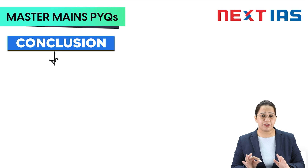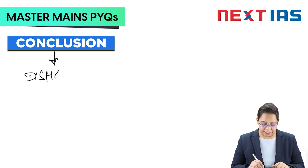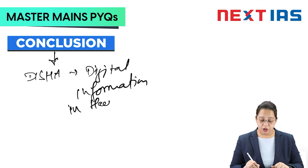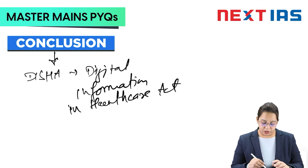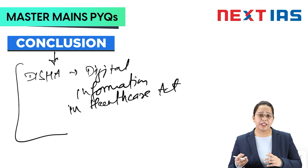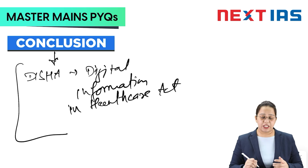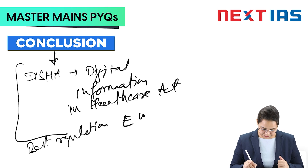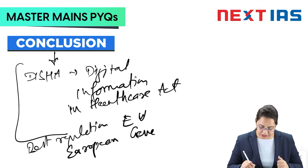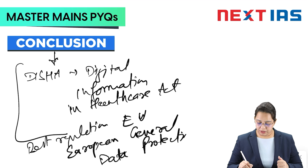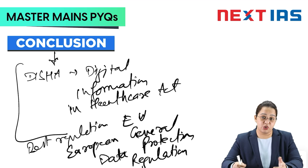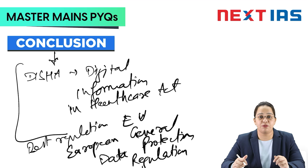In the conclusion, you can write that proper protection of this data is required to safeguard patient safety and security. For this, the DiSH Act — Digital Information Security in Healthcare Act — exists in India, which you can mention in the conclusion. You can say this act should be made more efficient and better. Also, a best practice is the European General Data Protection Regulation (GDPR) in the European Union, which can also be cited for better protection of healthcare data of individuals.